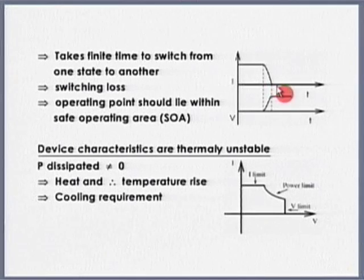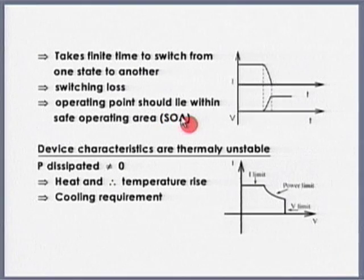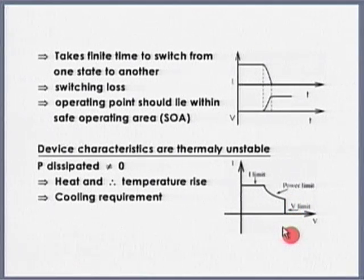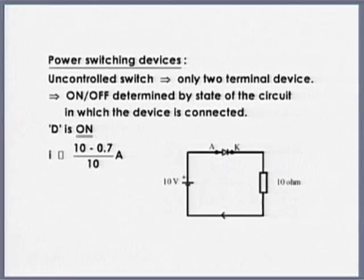At any time during operation, the operating point should lie within what is known as the Safe Operating Area (SOA). There are three zones: maximum current it can block, maximum voltage it can block, and the power dissipation limit. Some devices like BJT might have four zones. So these are the properties of an ideal switch — maximum current, maximum voltage, and power limit define the SOA.